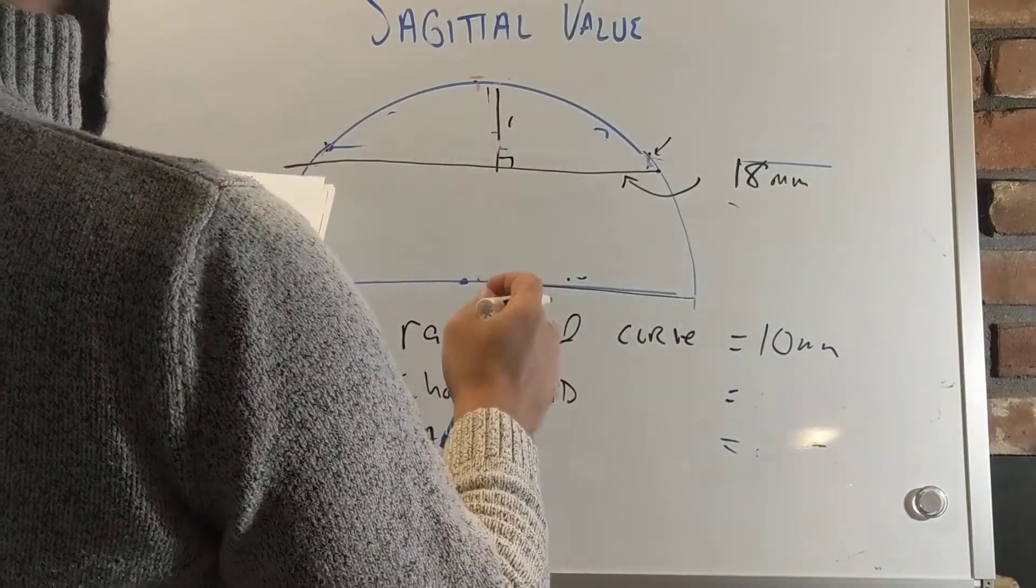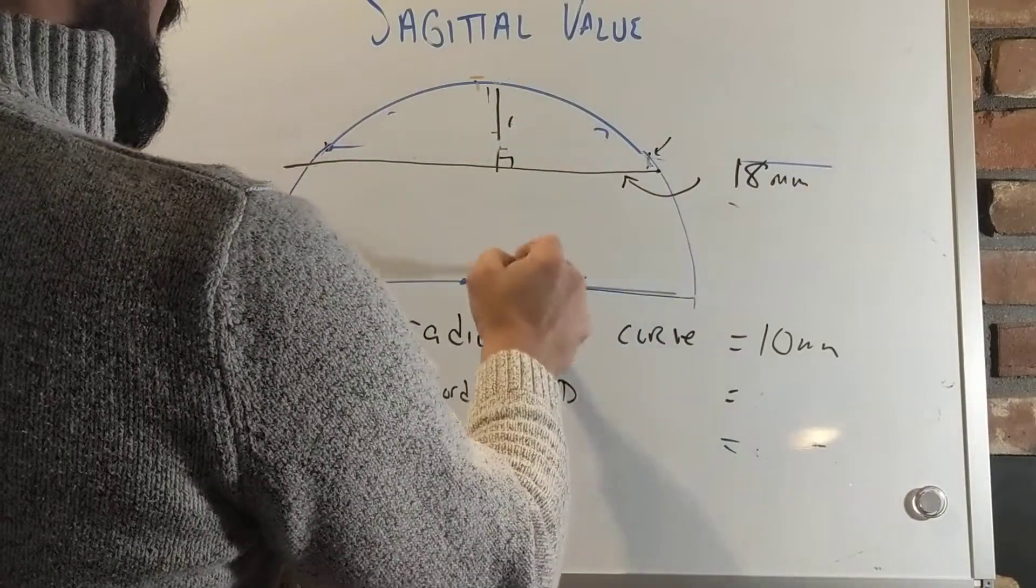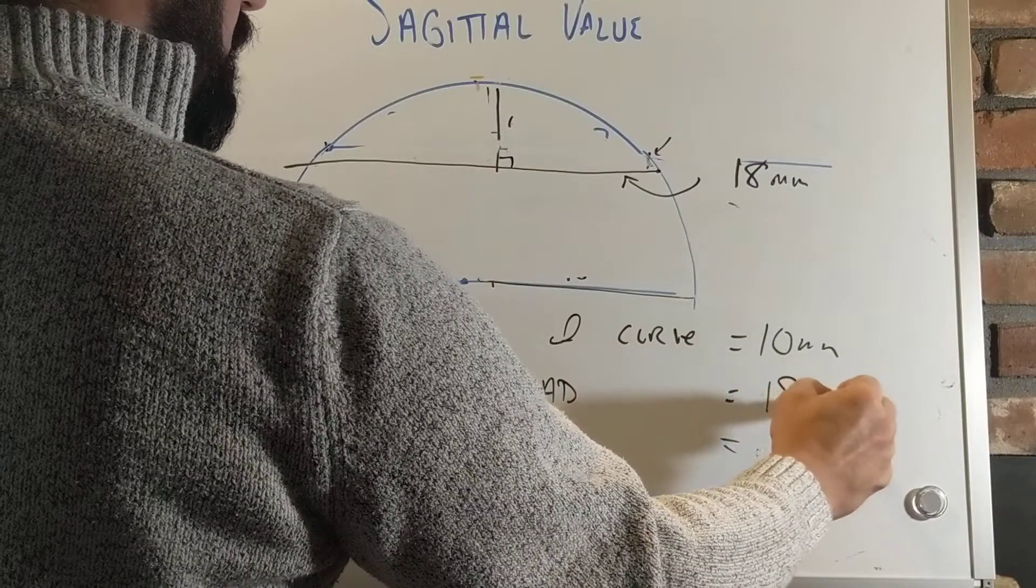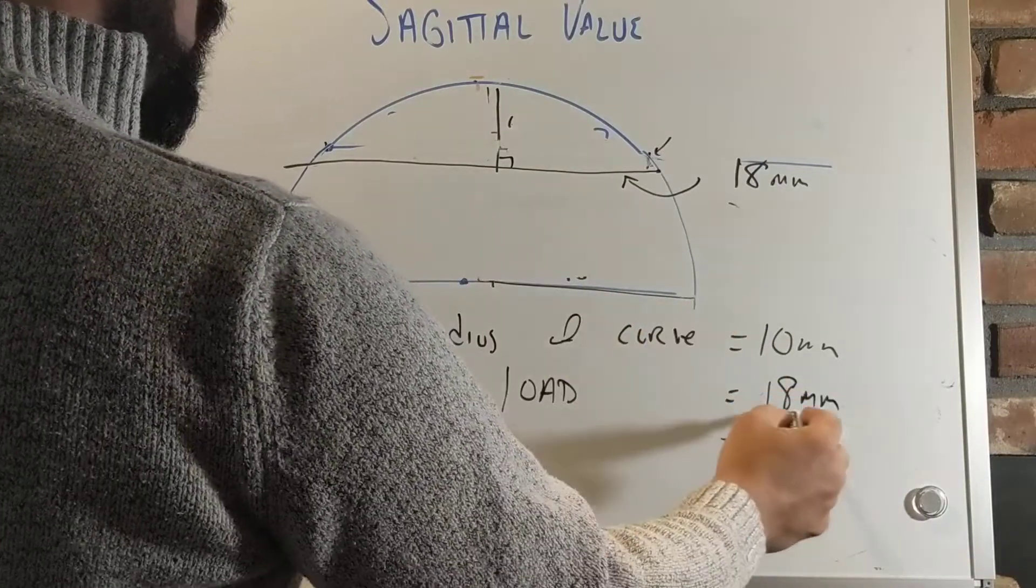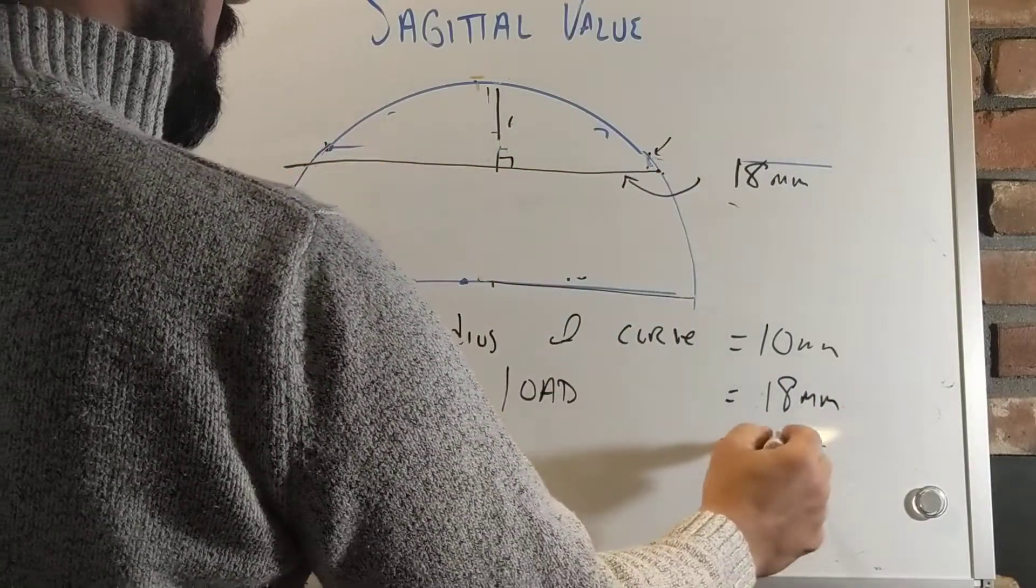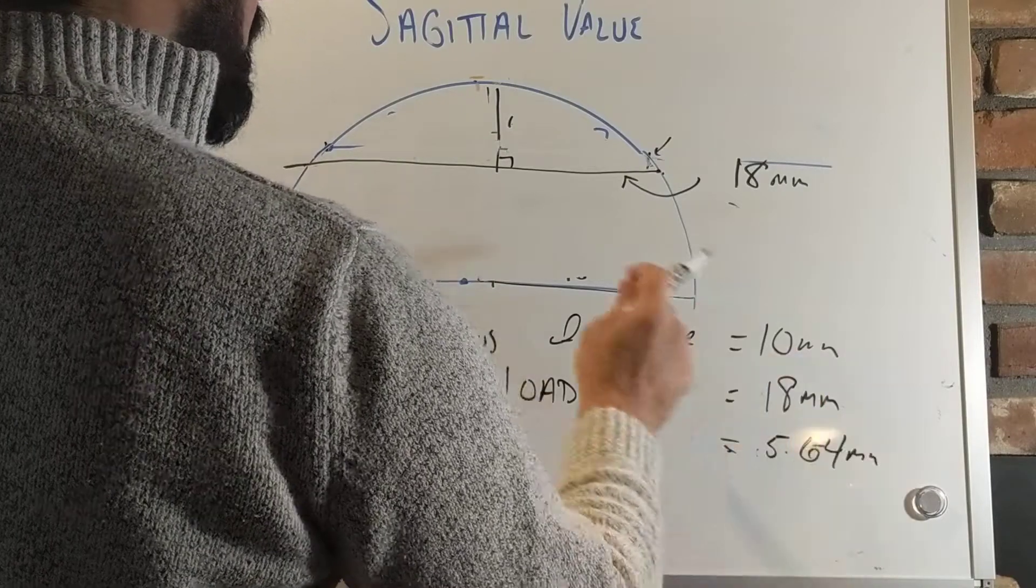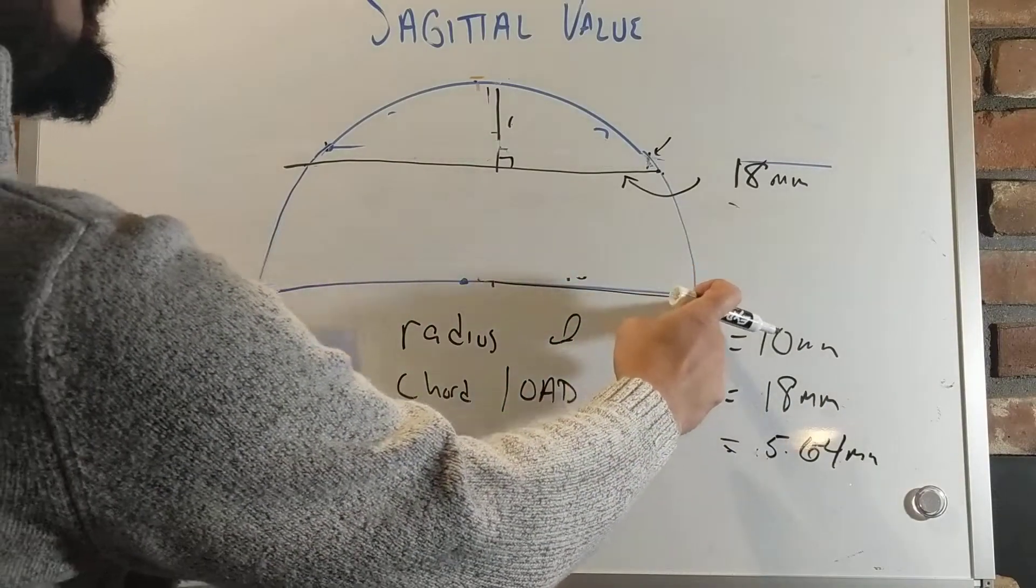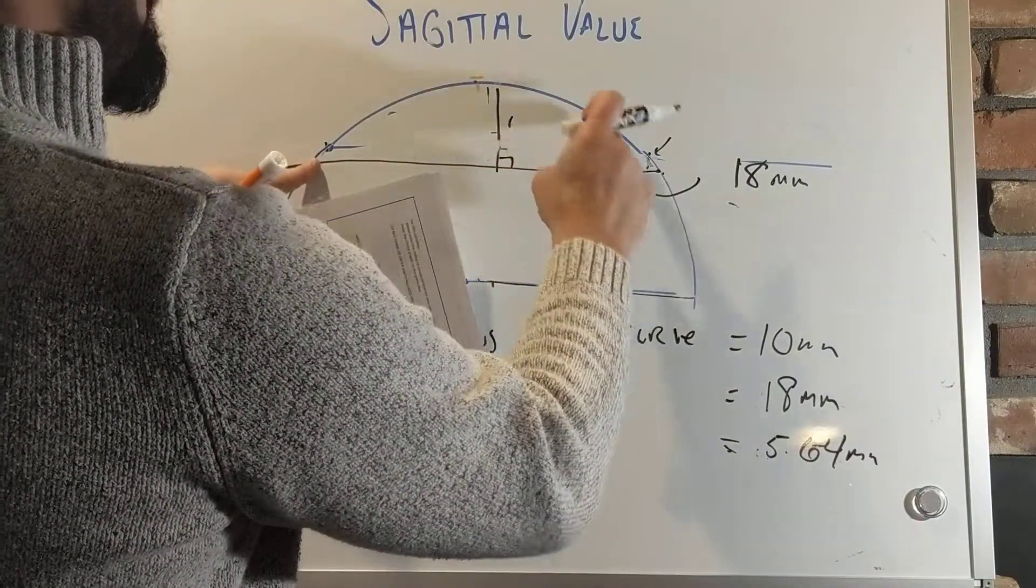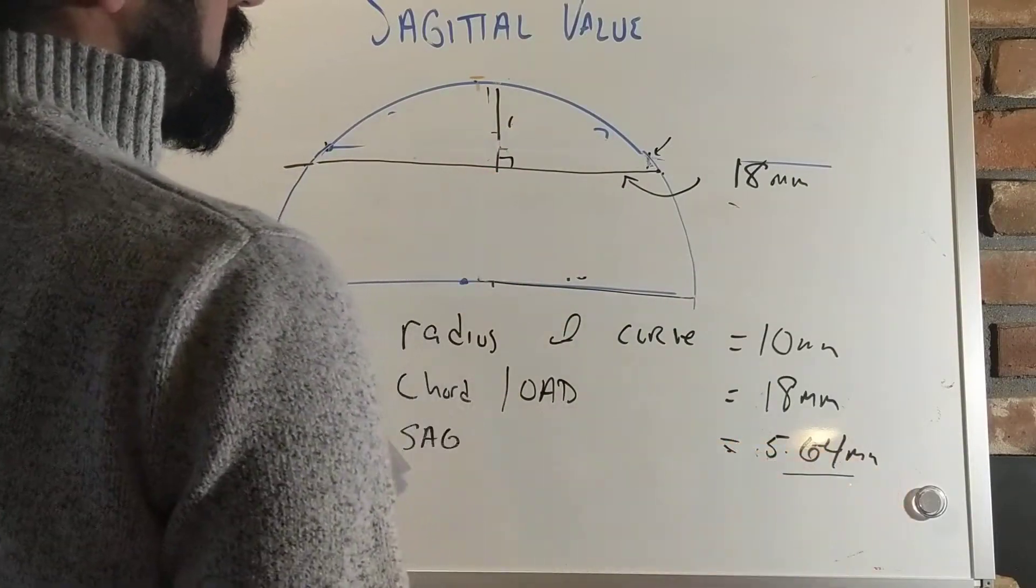You would be going from, instead of 10, if we plug it into this measurement, if we had a radius of curvature of 10 millimeters, and we made the chord length 18, well this new sag actually plummets to 5.64 millimeters. So now, by making this slightly smaller, by using the exact same shape, we've actually changed this value right here to a much smaller number.